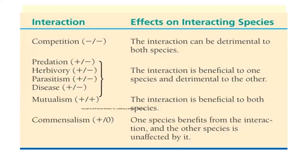These are some of the interactions that happen. We have competition, which is a negative-negative interaction — detrimental to both species, where none really benefits. We have predation, herbivory, and parasitism, which are positive-minus interactions — beneficial to only one species and detrimental to the other. Then we have mutualism, which is a plus-plus, a positive interaction that benefits both species. And then we have commensalism, where one species benefits but the other is unharmed or unaffected.